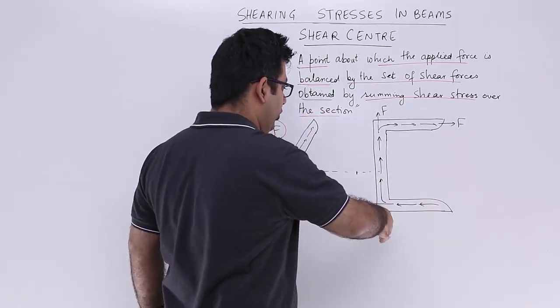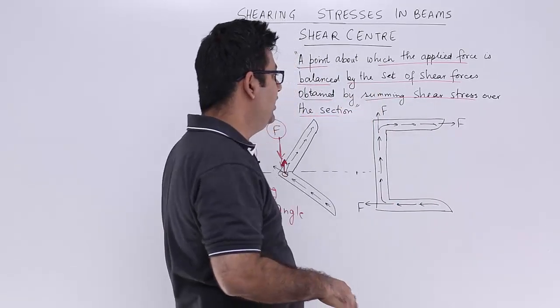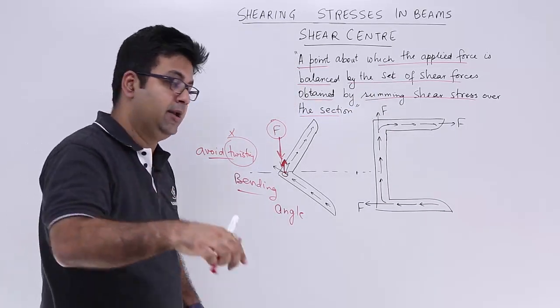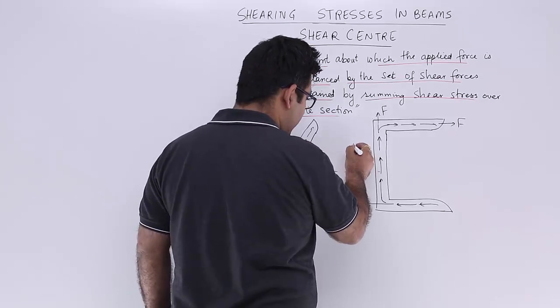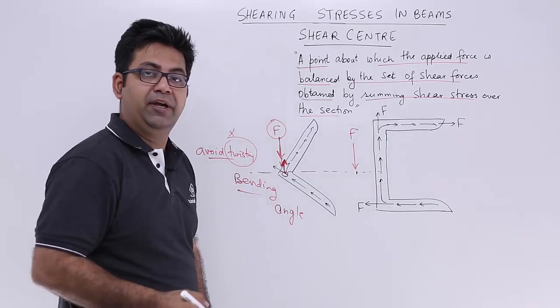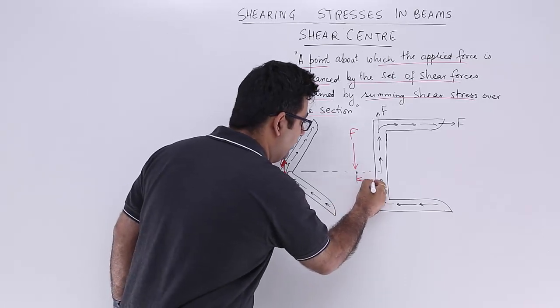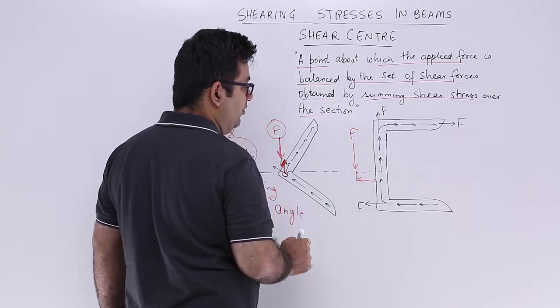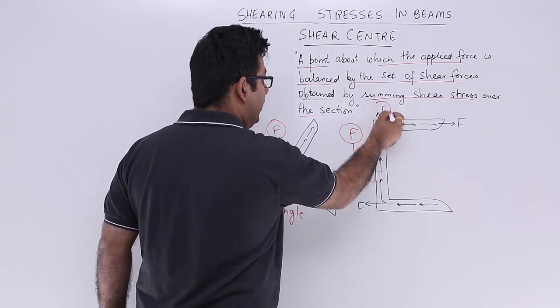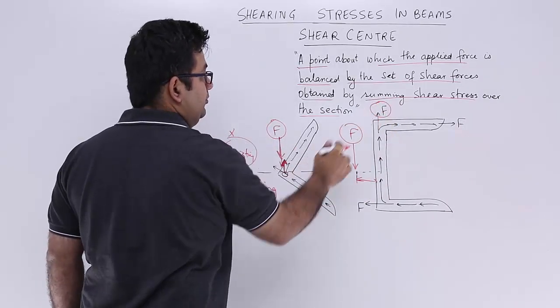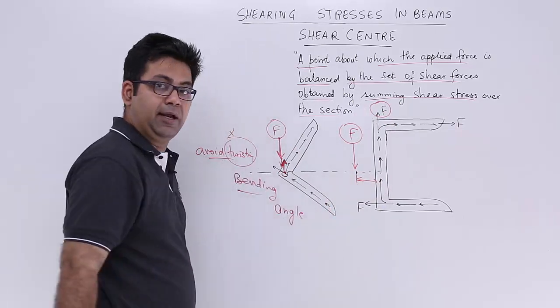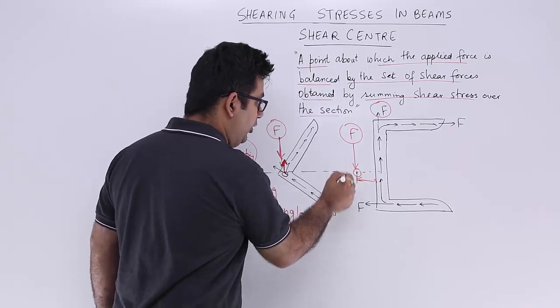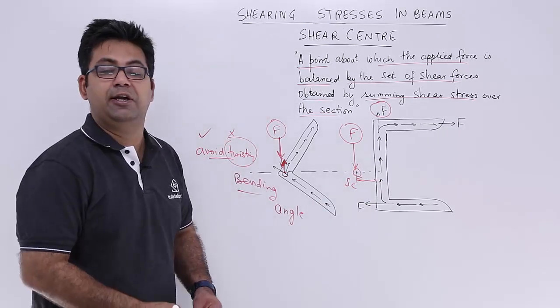But if you look at the force in this direction, it is still unbalanced. So in order to avoid twisting, I will have to apply the load at a point which is away from the plane of the section. If you apply force over here, this will counter this force, and because it is eccentric, it will avoid the twisting. This point is called the shear center.